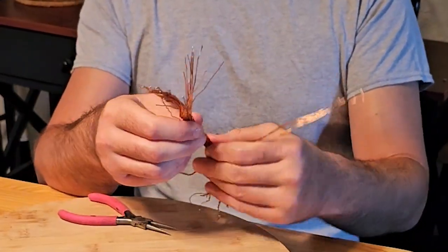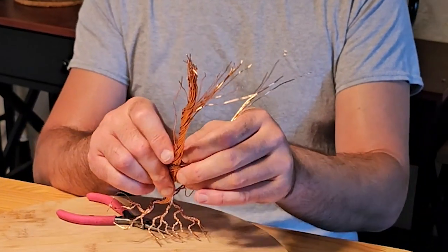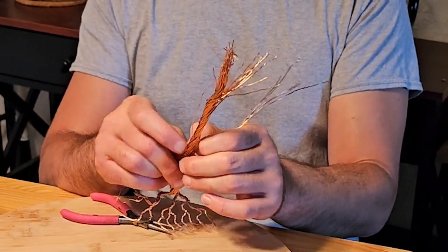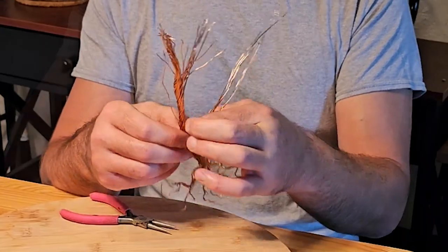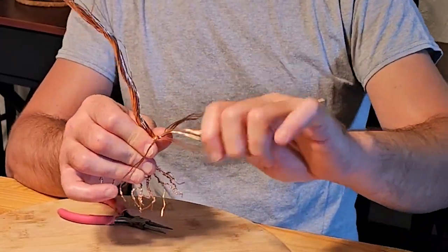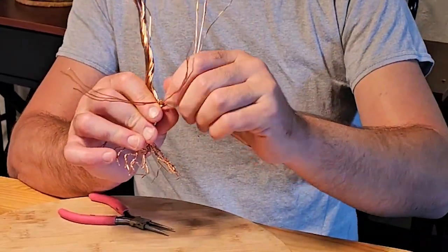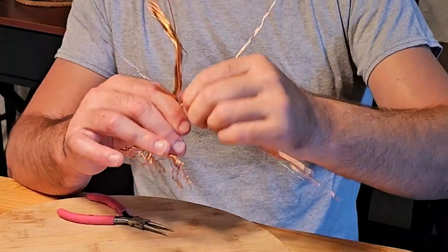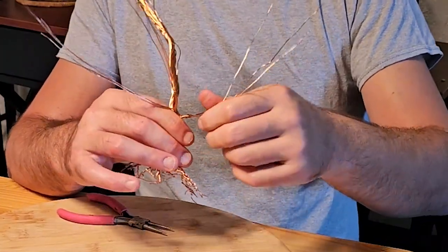So now we begin to divide off our first primary branch. We make sure that they're the outside wires that we're separating, and then we just twist and ramify out the branch like we would a natural tree.